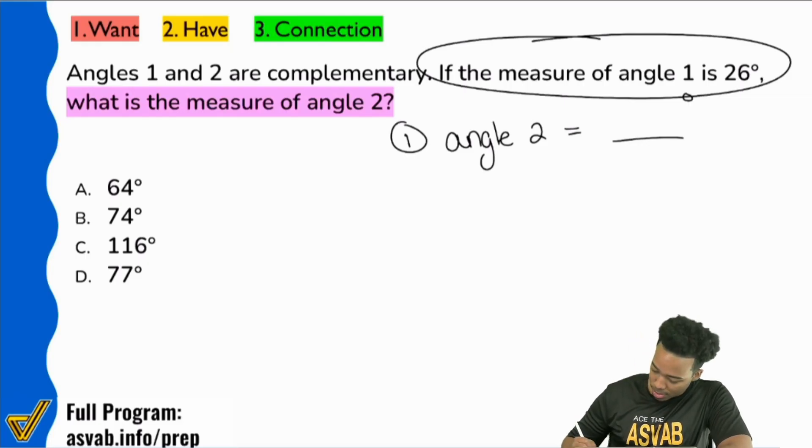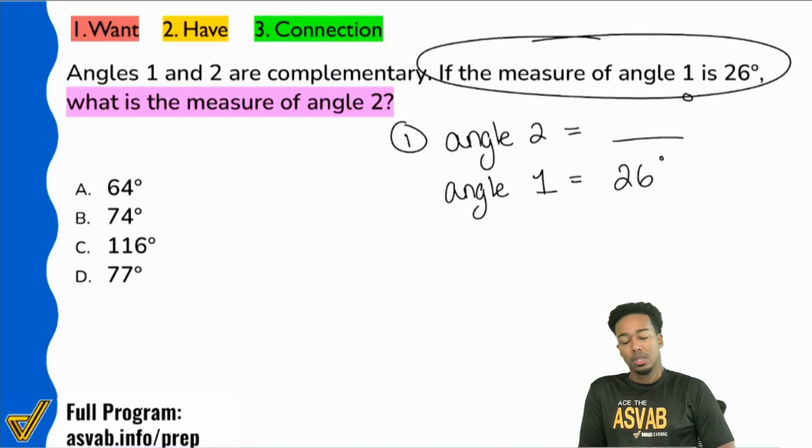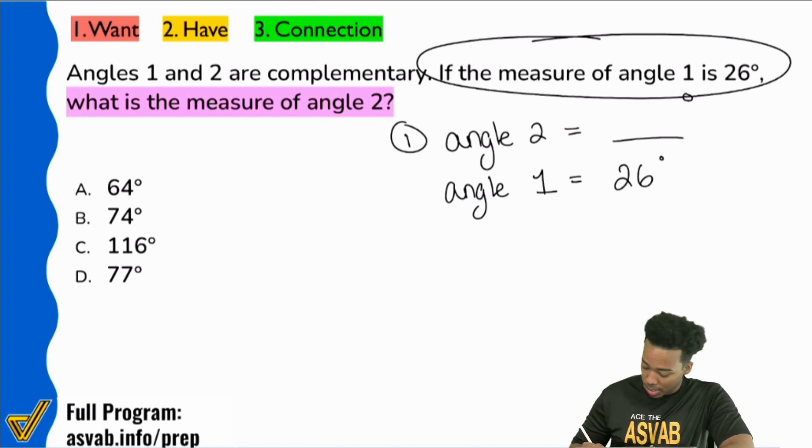So with that right over here, angle one, that's going to be 26 degrees. Okay. I don't have enough information here yet. I don't have enough information to solve this. All I know is I got two angles. I'm looking for one of them. But if we look at the information here, it's going to say, hey...